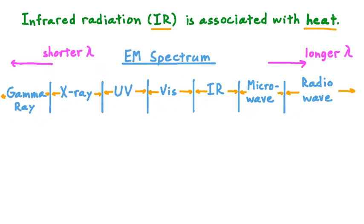As we move from left to right on this spectrum, the wavelength, symbolized by the Greek letter lambda, gets longer, and as we move right to left, the wavelength gets shorter. Looking back at the visible portion of this spectrum, this part includes all the colors that our eyes can see — red, green, blue, yellow, and so forth. If we were to go to the far right side of the visible spectrum, we would be looking at light that's colored red.